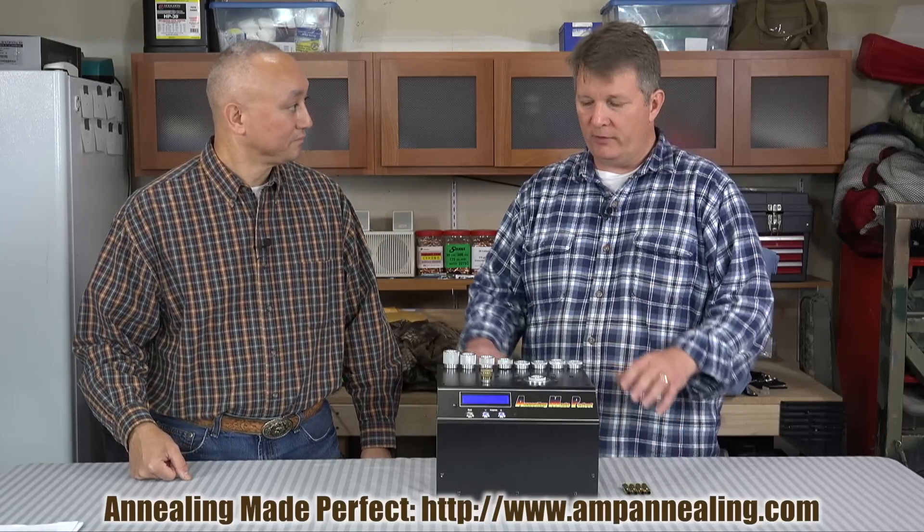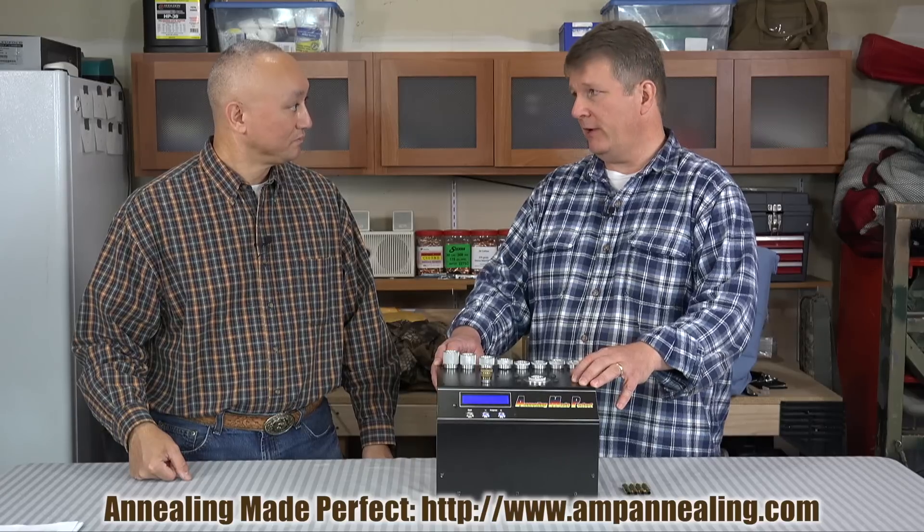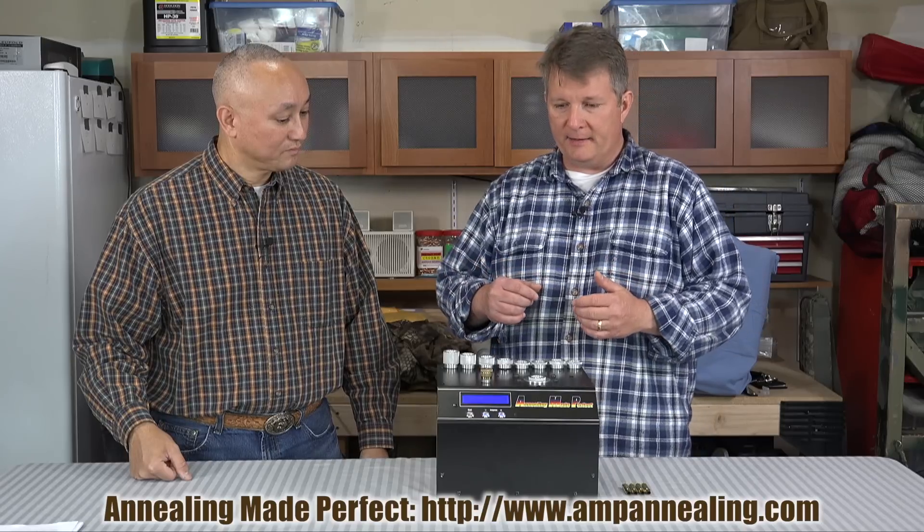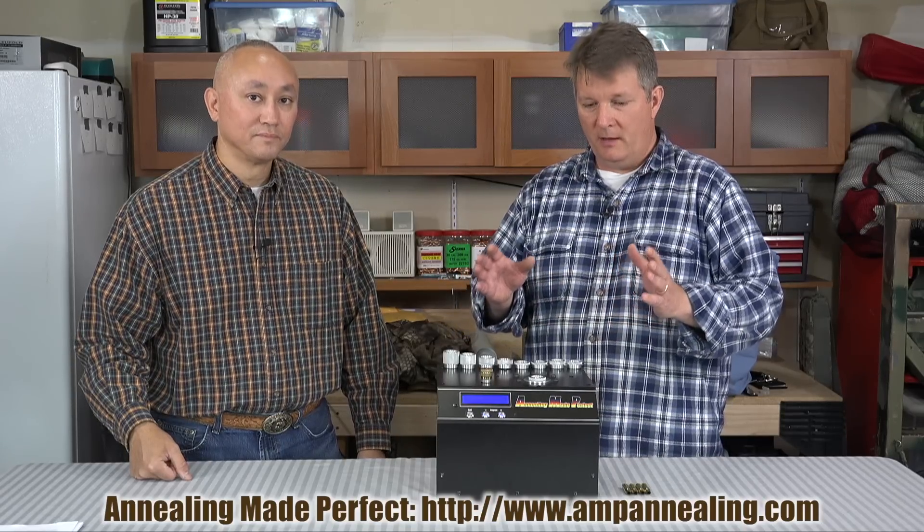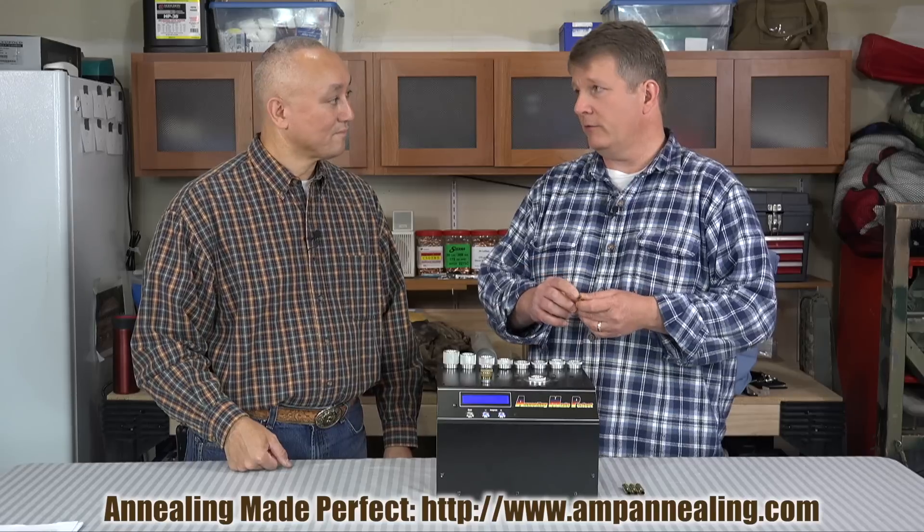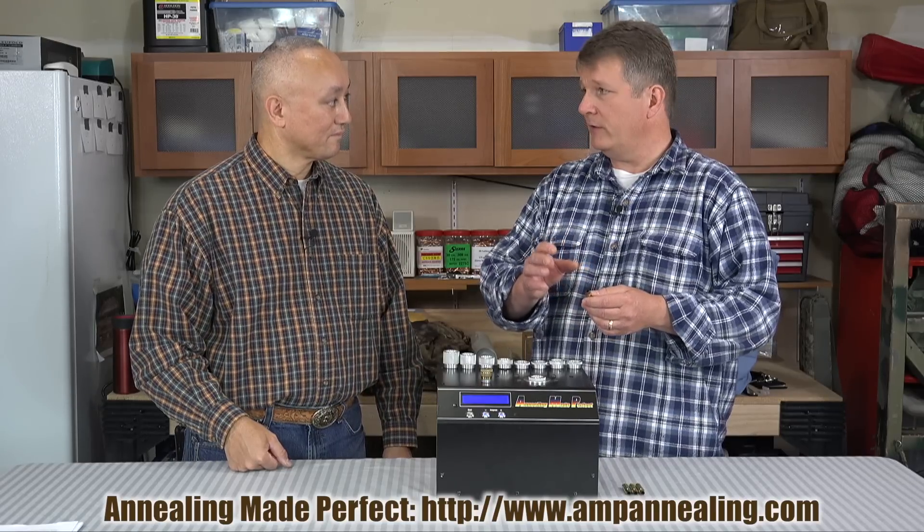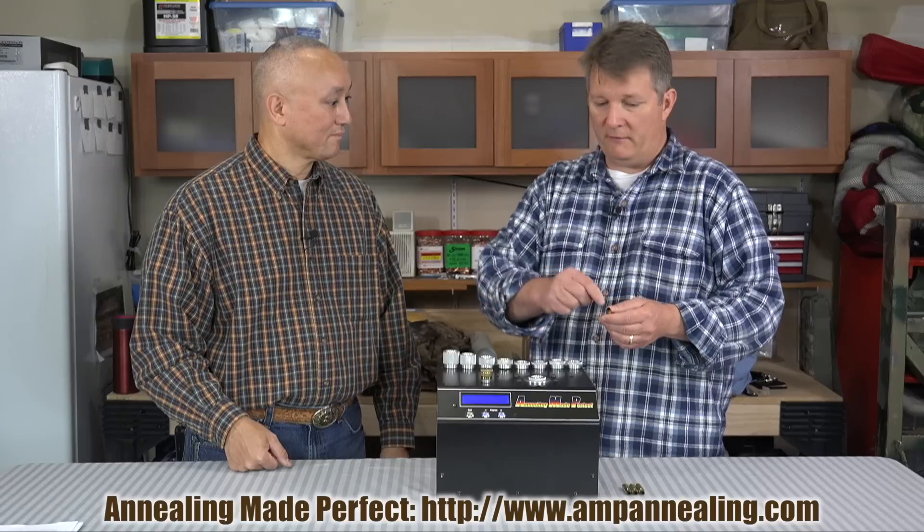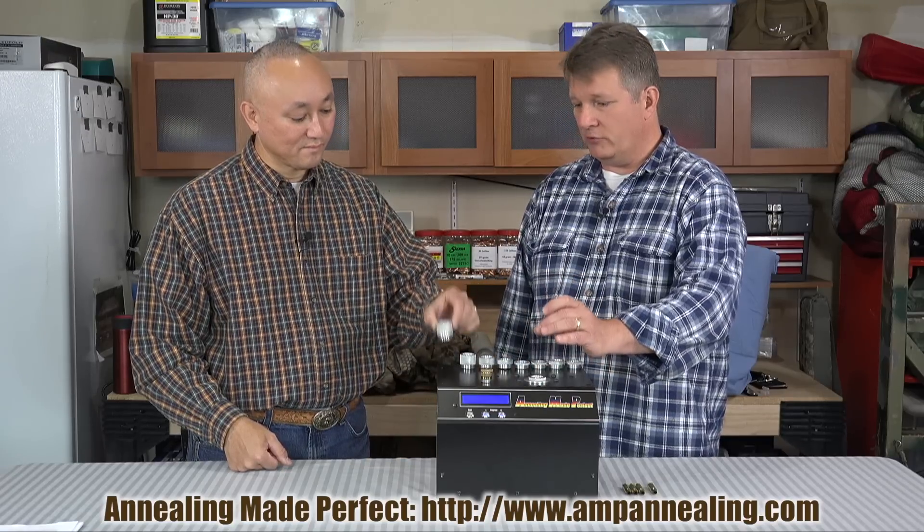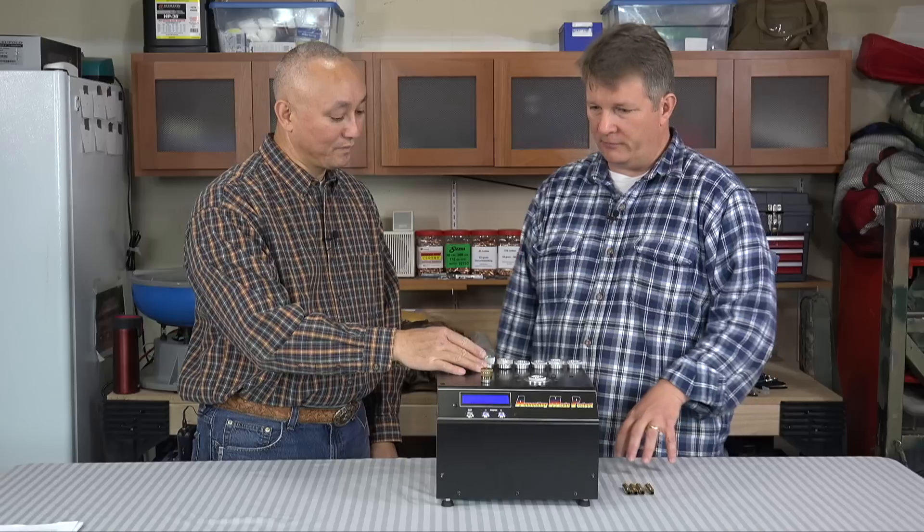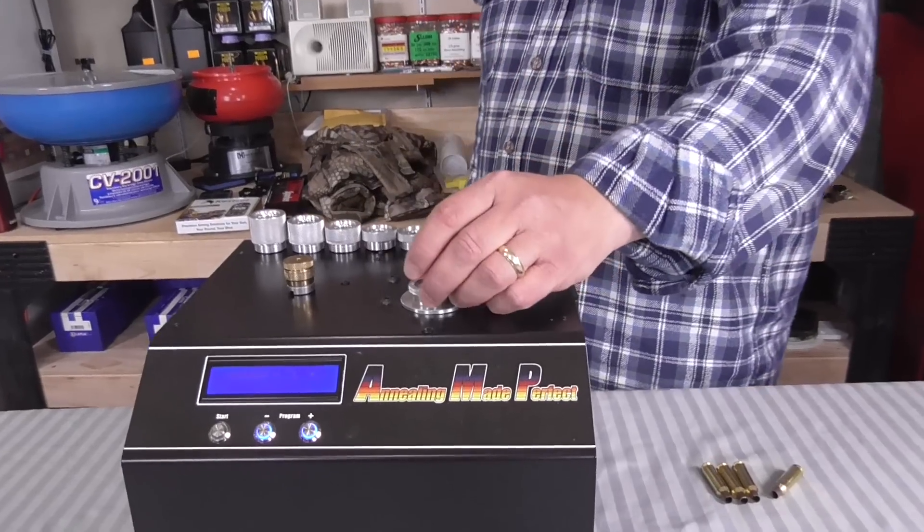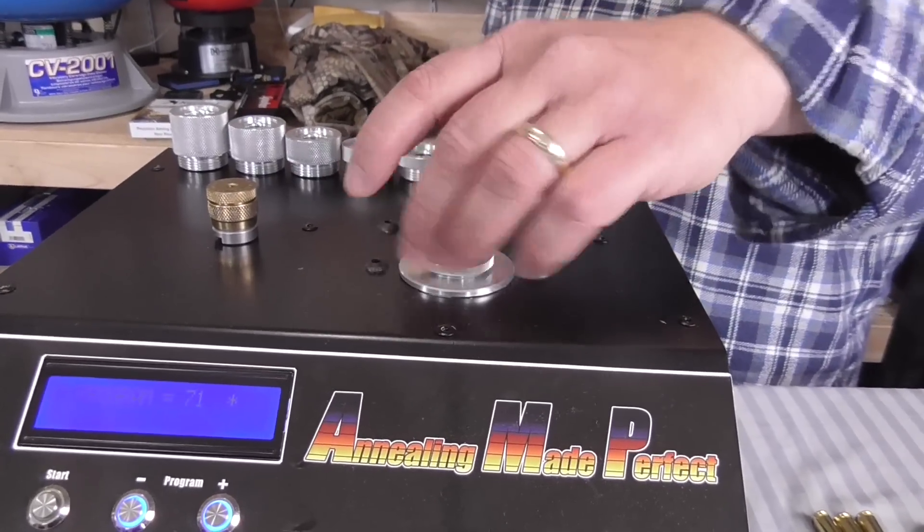What's really cool about this machine is it is pre-programmed for various makes and calibers of cartridges. They've got a video about this on the Annealing Made Perfect site. But what they've done is they'll look, for example, at the Lapua 6.5x47, and using a Vickers hardness tester, they will determine what is the appropriate duration for that particular cartridge.